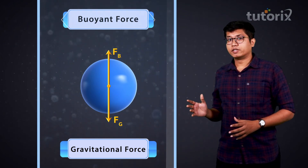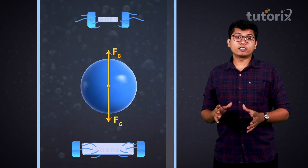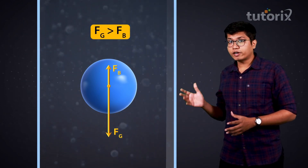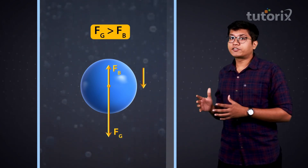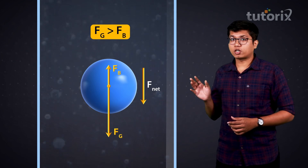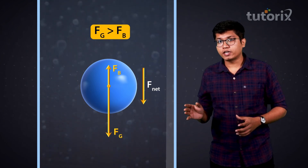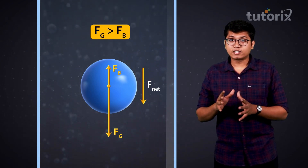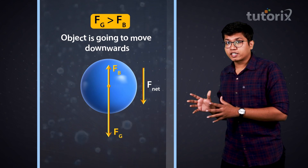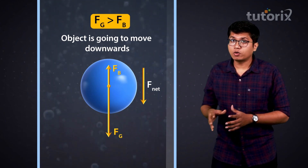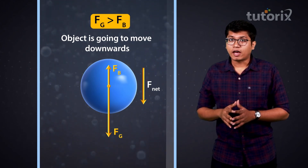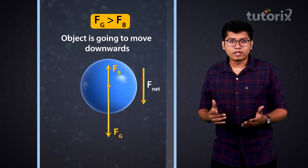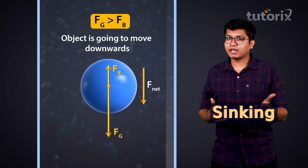For example, if the gravitational force is stronger than the buoyant force, then the net resultant force on this body is going to point downwards. This means that the object is going to move downwards, and we know for a fluid, if an object is going down, that means it's sinking.